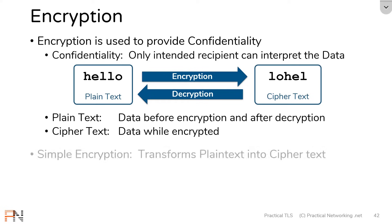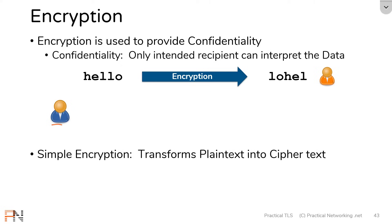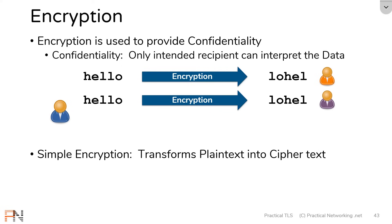What we are looking at here is referred to as simple encryption, where all we are doing is taking plaintext and transforming it into something else. But there are problems with simple encryption. Let's say I have a blue user on the left trying to send the word 'hello' securely to an orange user. He can use encryption to turn it into ciphertext to send across the wire. But if the blue user wants to send the same word to a purple user, it doesn't make sense to use the same encryption algorithm, because then the orange user will know how to decrypt it.